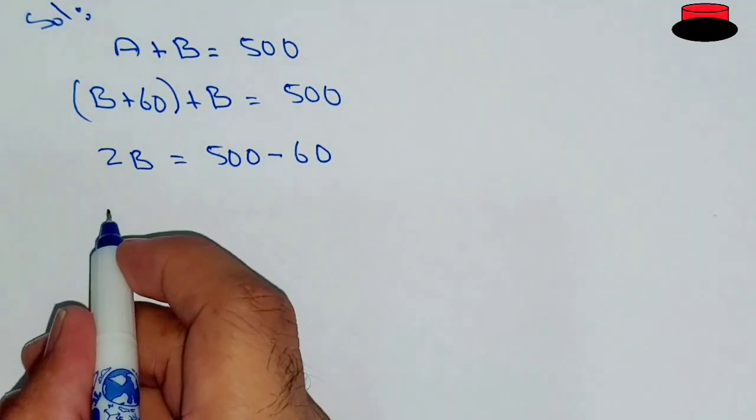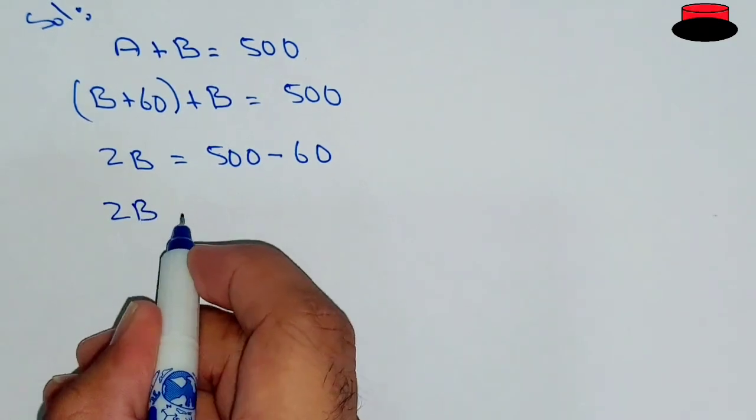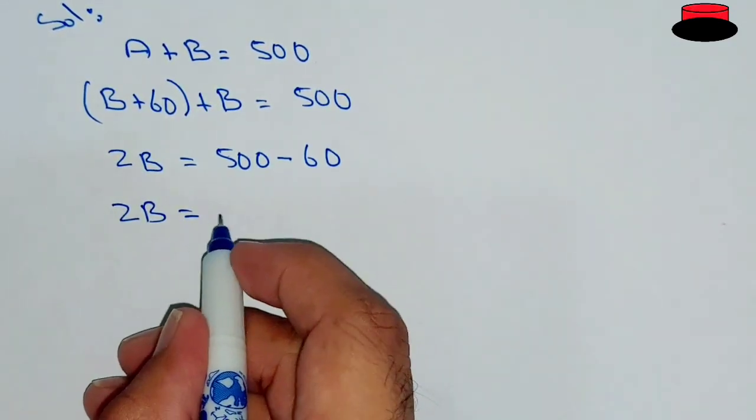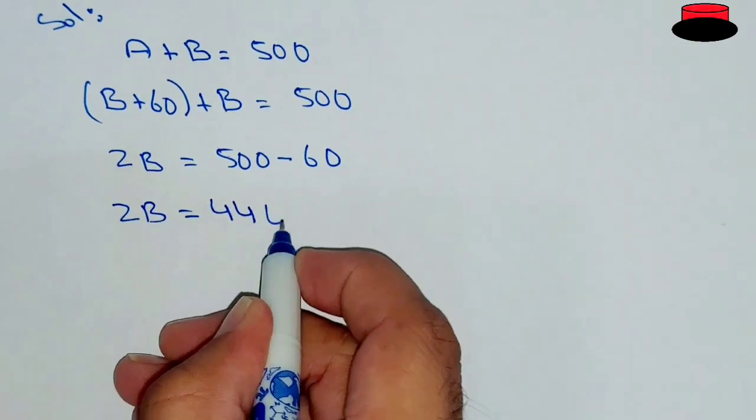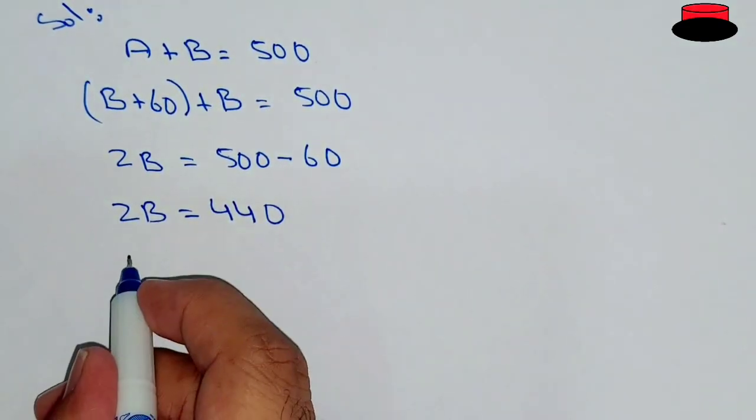side, so the sign will change. So 2B equal to 500 minus 60, which is going to be 440.